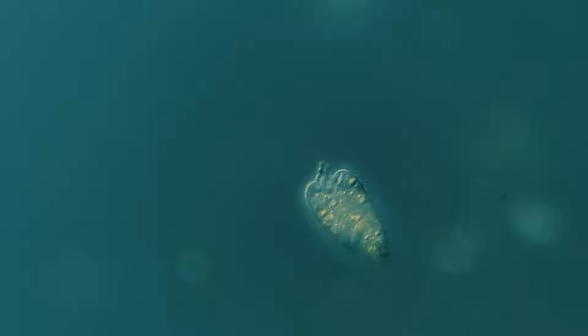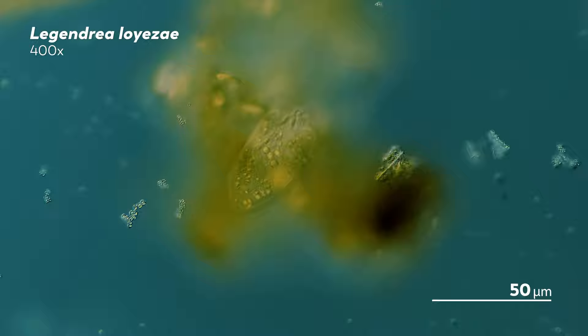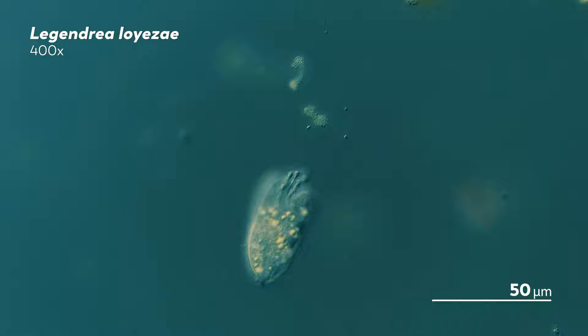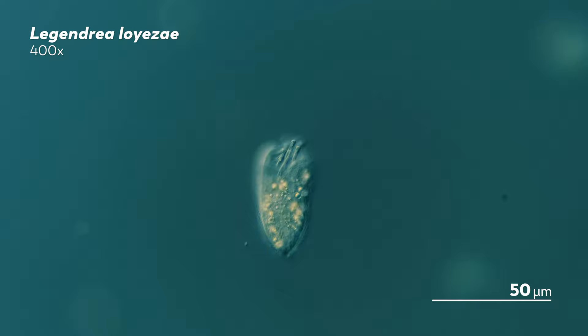We here at Journey to the Microcosmos headquarters have been very excited about this ciliate, which is called a Legendrea loyazae. James, our master of microscopes, found it in a lake, which made him just one of five people in human history who had ever found this organism. In our last episode, we talked about how his discoveries managed to reconcile the contradictions that had gone unexplained in the observations previous scientists had made.